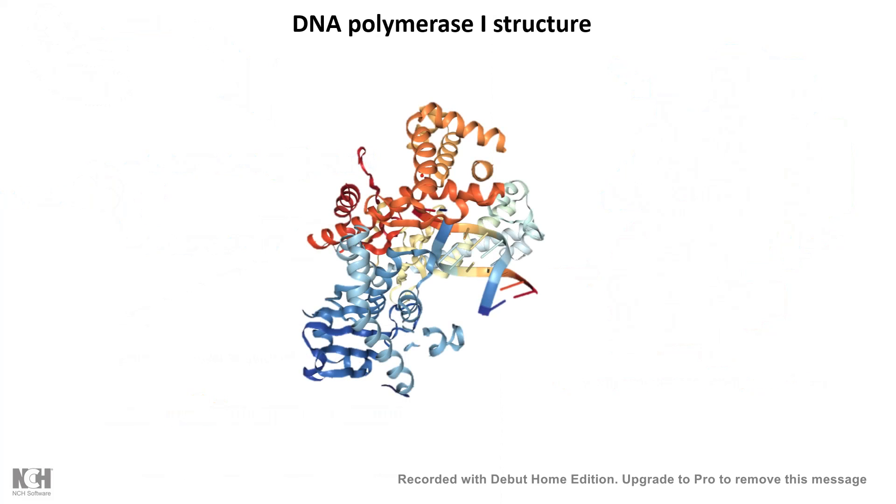Now let us look at the DNA polymerase 1 structure to understand the Klenow fragment. So DNA polymerase 1 has three fundamental domains. The first domain is a polymerization domain, which helps in polymerizing in a 5' to 3' direction.